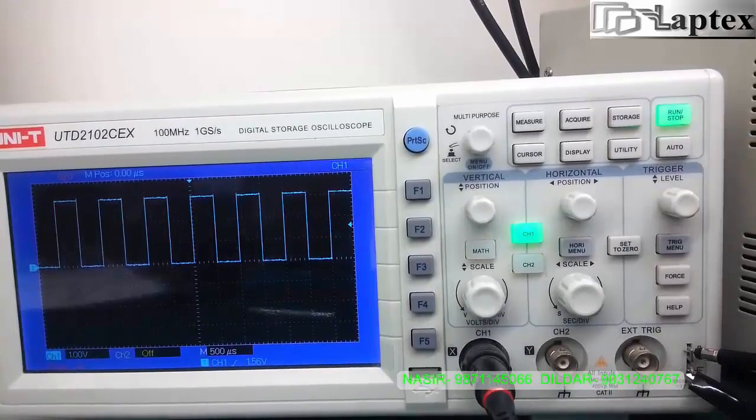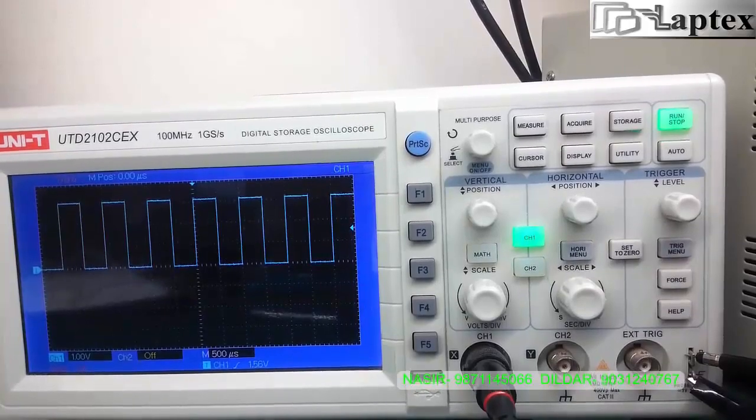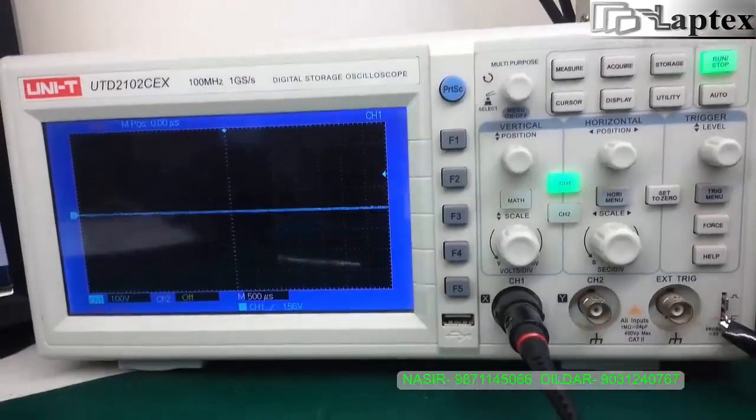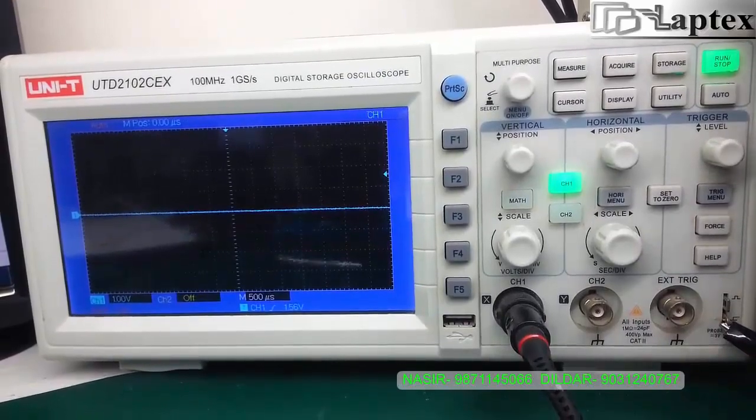Put the probe in the square wave position that you can see here, and then just press auto. You will get your channel calibrated that is ready to use for measuring any signals. Now let's see another point.